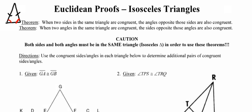The second theorem is very similar but in reverse. It says anytime you have two angles in the same triangle that are congruent to each other, we know that the sides opposite those angles also have to be congruent. With two congruent angles, the side opposite the left base angle is going to be the right leg, and the side opposite the right base angle is going to be the left leg.